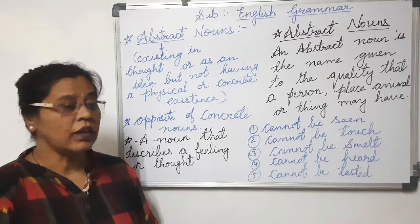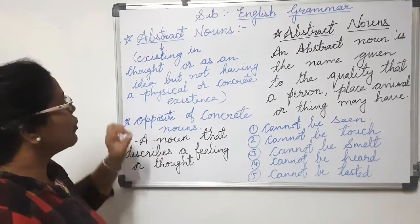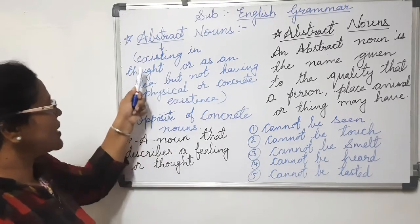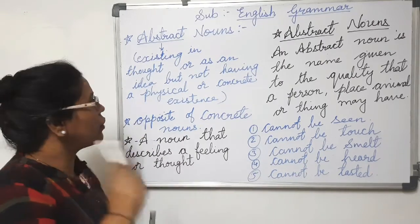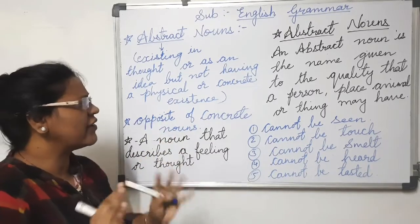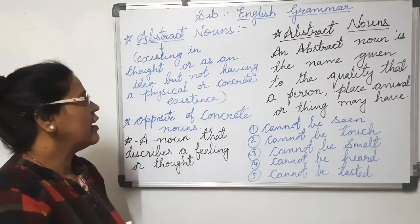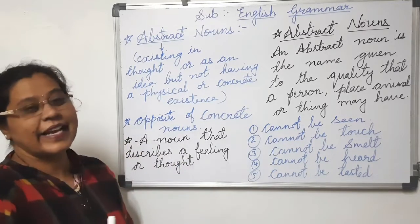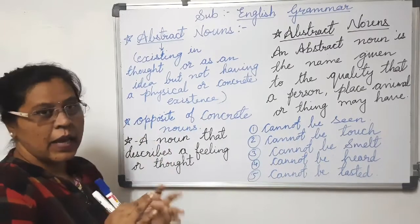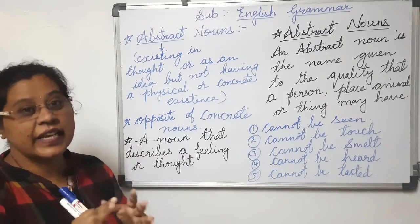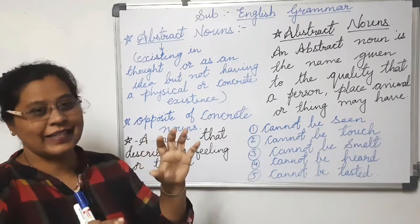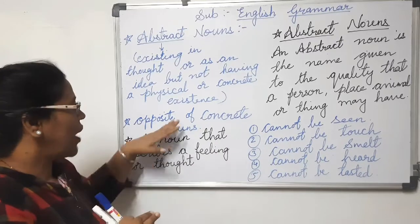First, we are going to understand the meaning of 'abstract.' Abstract means existing in thoughts or as an idea, but not having a physical or concrete existence. The words which describe an idea or thoughts but do not have any physical or concrete existence are called abstract nouns.